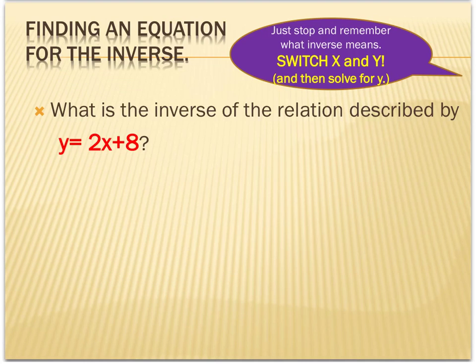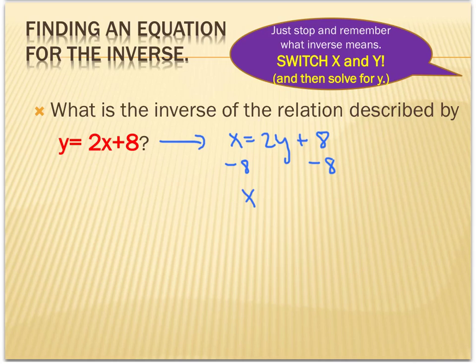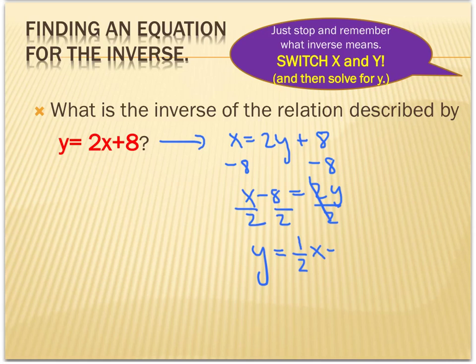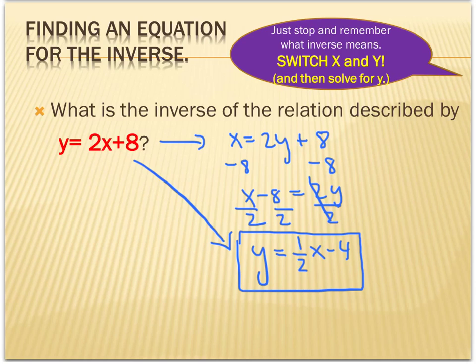Algebraically finding an inverse works exactly the same way — we literally switch the x and y values. So everywhere I see a y, I put an x, and everywhere I see an x, I put a y. Once you switch x and y, you then have to solve for y. This is the inverse of the original function. Notice I started with a linear function and ended with a linear function, so both are functions — they are inverse functions.